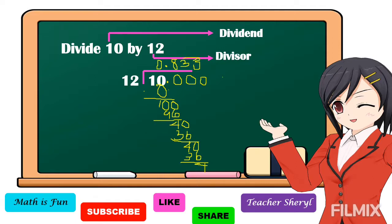So if we round it off to the nearest thousandths, we have an answer of 0.833. If we round it off to the nearest hundredths, our answer is 0.83. And if we round it off to the nearest tenths, we have an answer of 0.8.